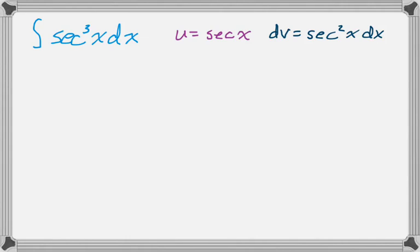Making those choices so that I can find a derivative and antiderivative. So du is secant x tan x dx, and v is tan of x.